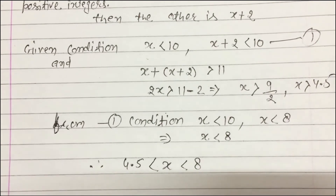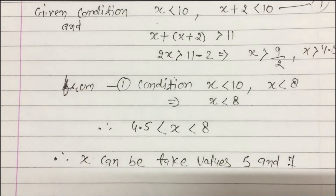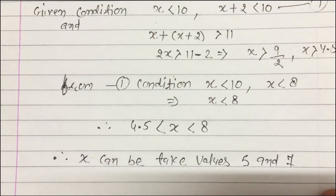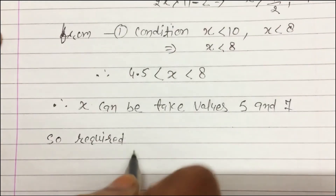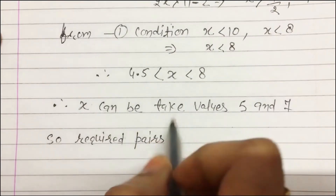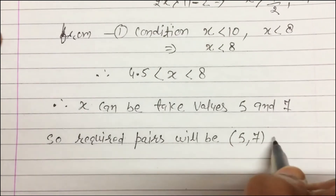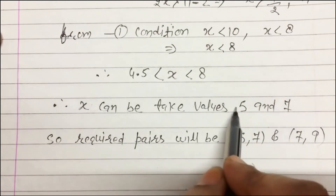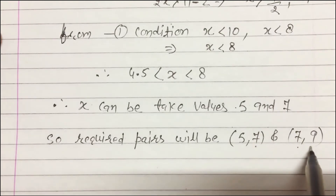So x can take values 5 and 7 only. Therefore the required pairs are (5, 7) and (7, 9) — where 5 is x and 7 is x + 2, and similarly 7 is x and 9 is x + 2.